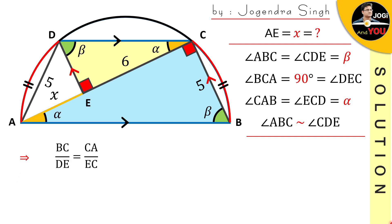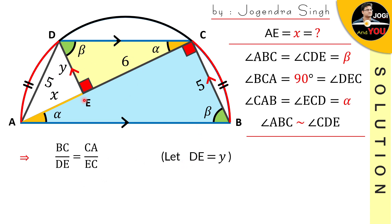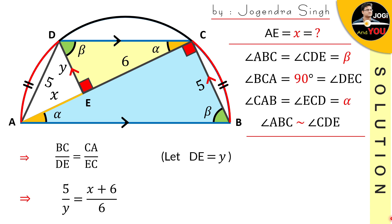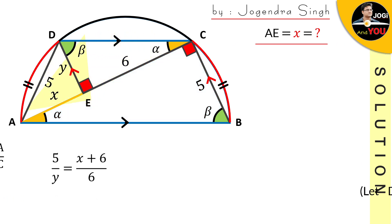The main useful information we needed is this ratio. Now let the length DE equal y. All the information we have in this figure is BC, DE, CA, and EC. Replacing them gives us: 5 over y equals (x plus 6) over 6.